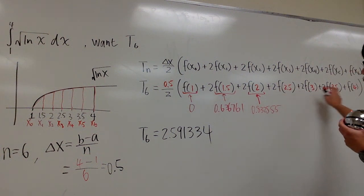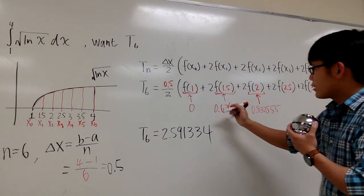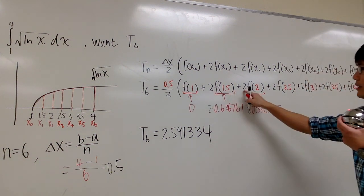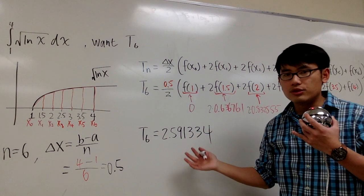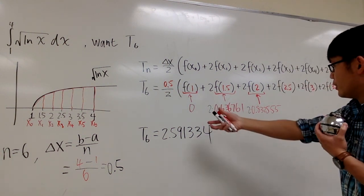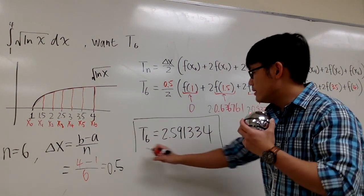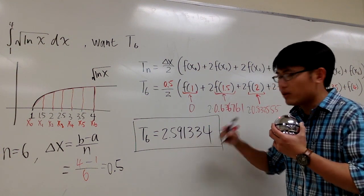Anyways, you can do the same for the rest, but then don't forget, for anything in the middle, you actually have to multiply by 2 with it. This is 2 multiply that, 2 multiply with that. But then for the last one and also the first one, there's nothing to multiply. And then the rest is just use the calculator, and then you are going to end that with T_6 is equal to 2.591334. That's it.